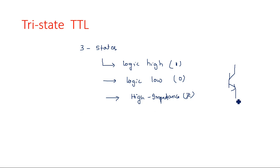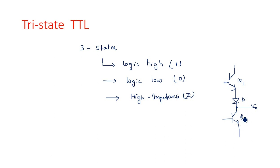If you take a totem pole configuration in the TTL, the output of TTL is a totem pole network having two transistors and one diode. In the totem pole configuration, if Q1 is on then the diode is also on but Q2 will be in off state. Q1 and Q2 act in a push-pull configuration. If Q1 is on, Q2 is definitely off and the output becomes logic 1. If Q1 is off, then Q2 is on and output is logic 0 because the output is connected to ground.